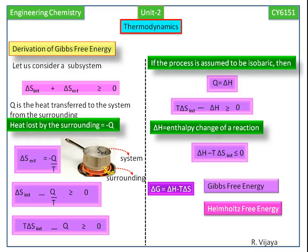Helmholtz free energy is also defined as delta A equals delta E minus T delta S, where delta A is the change in Helmholtz free energy and delta E is the change in internal energy.